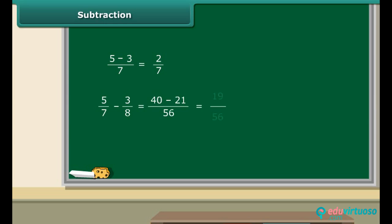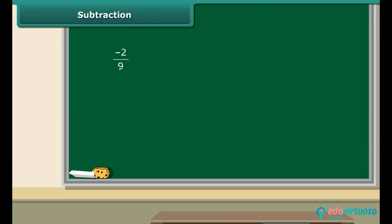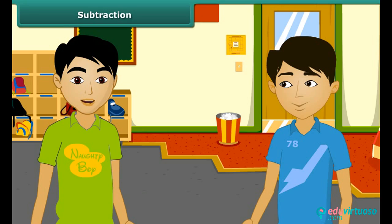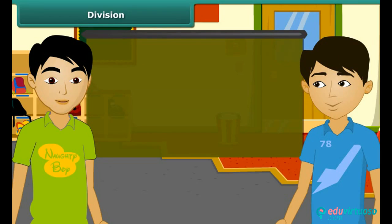Can you guess how we can multiply rational numbers? While multiplying a rational number by a positive integer, we multiply the numerator by that integer, keeping the denominator unchanged. When we multiply the rational numbers, we multiply the numerators and then we multiply the denominators.